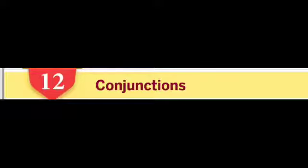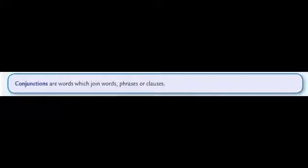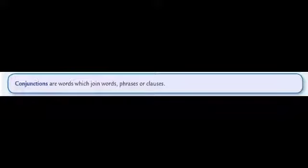What is a conjunction? A conjunction is a word that joins two words, phrases, or two sentences. Conjunctions are words that join words, phrases, or sentences.